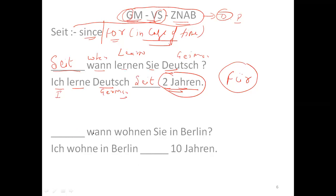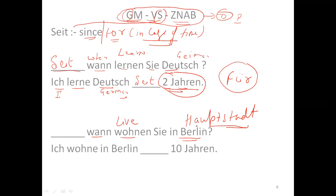Another example: 'Seit wann wohnen Sie in Berlin?' Berlin is the Hauptstadt — the capital — of Germany. Since when have you been living in Berlin? Answer: 'Ich wohne in Berlin seit zehn Jahren' — I have been living in Berlin for the last ten years. Again, 'for' here is in case of time, so we use seit.